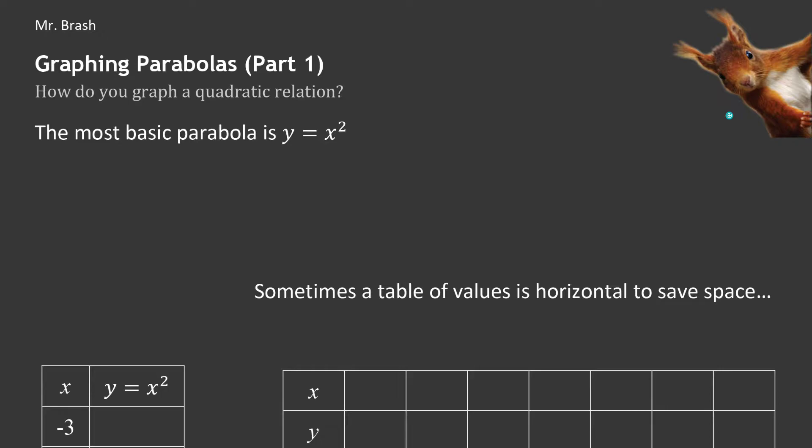I'm going to be going over graphing parabolas. This is going to be part one of a couple different videos on graphing. I'm just going to go over the basics. So how do we graph a quadratic relation? If you're not sure what a quadratic relation is — which looks like a parabola on a graph — you might want to check out a previous video or some Khan Academy videos on what that is.